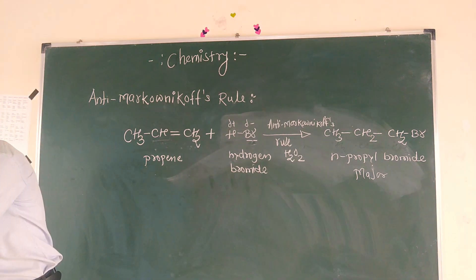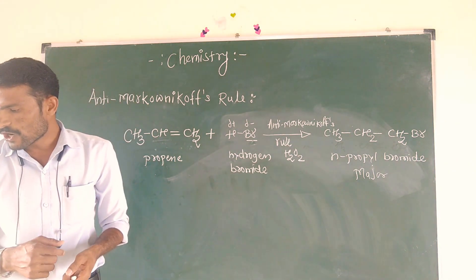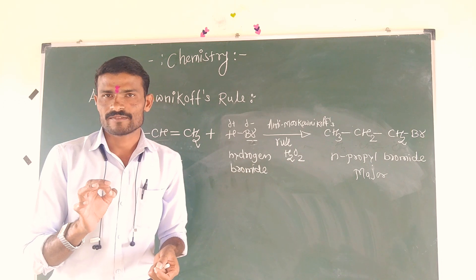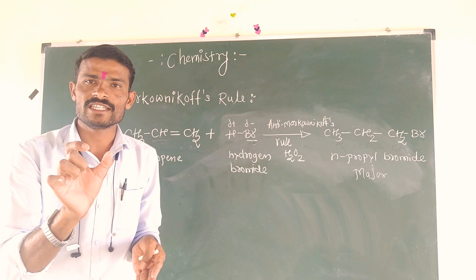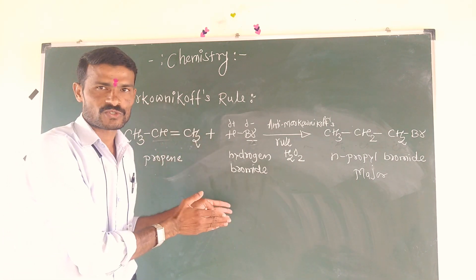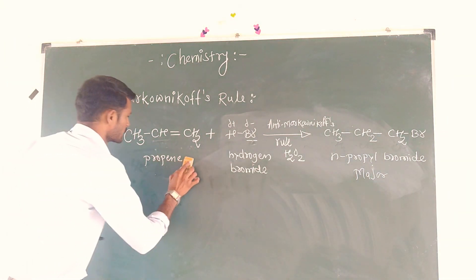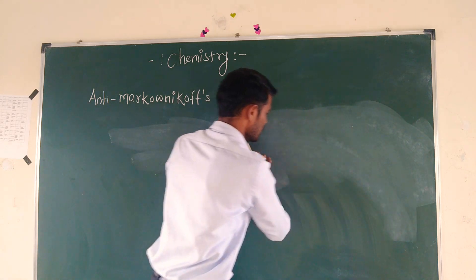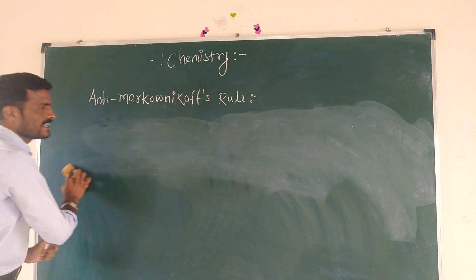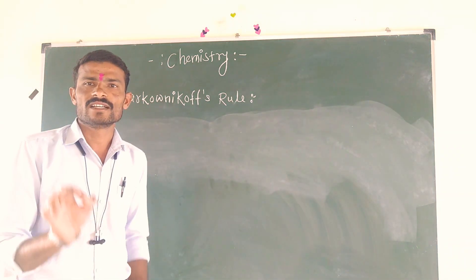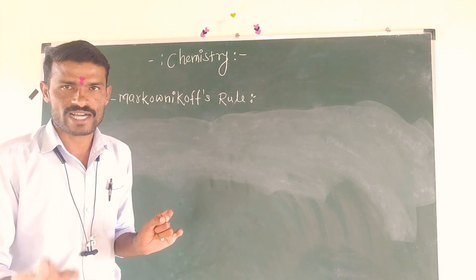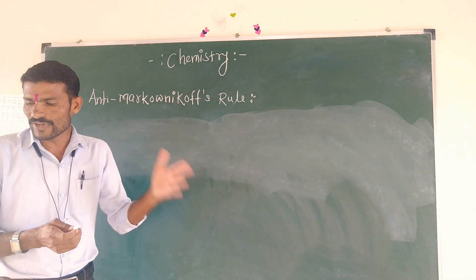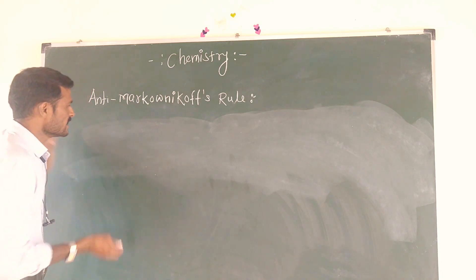The chemical equation for the action of hydrogen bromide on styrene in the presence of a peroxide follows the Anti-Markovnikov's Rule. In the presence of peroxide, hydrogen bromide adds to styrene according to this rule.